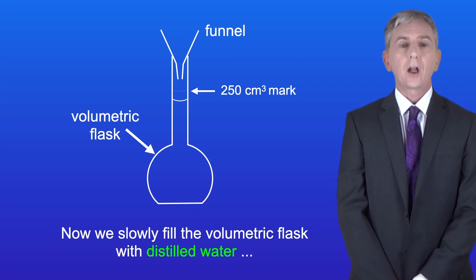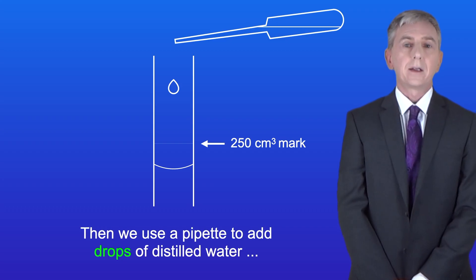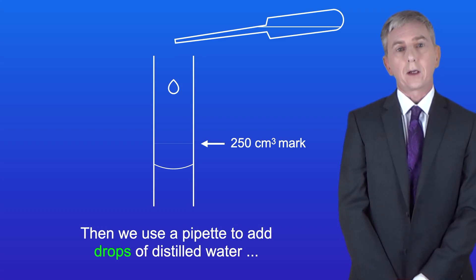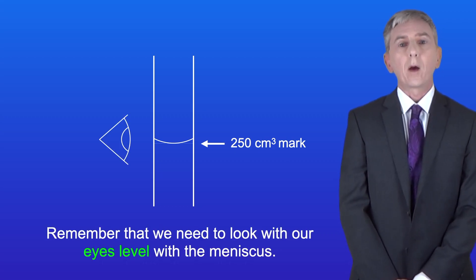Now we slowly fill the volumetric flask with distilled water so that the level is just below the 250 centimeters cubed mark. Then we use a pipette to add drops of distilled water until the bottom of the meniscus is on the 250 centimeters cubed mark. And remember that we need to look with our eyes level with the meniscus.